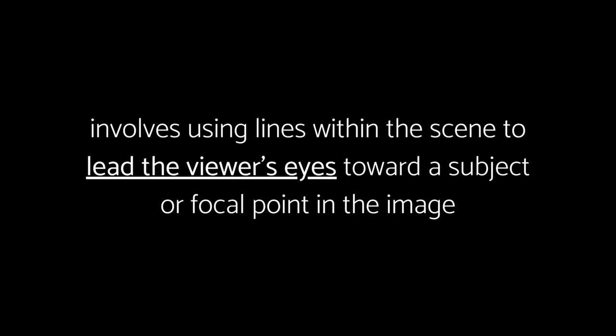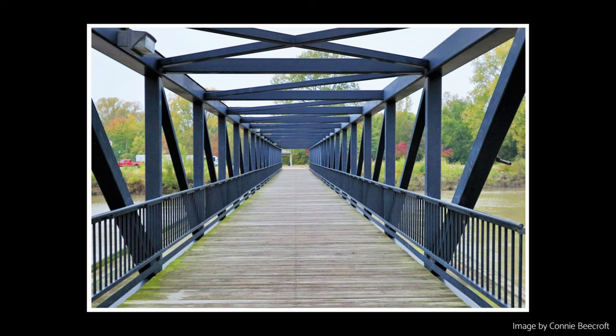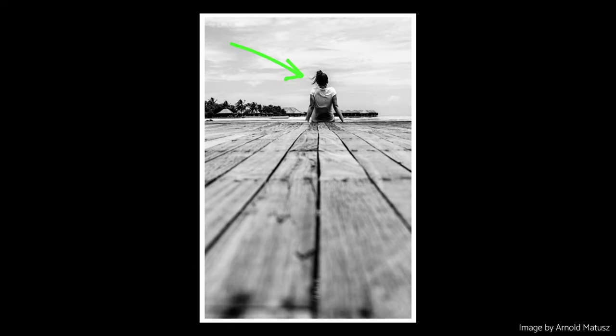The fifth technique is to use leading lines. Leading lines are a powerful composition technique that involves using lines within the scene to lead the viewer's eyes toward a subject or focal point in the image. The point that the leading lines are directed to is often the point of emphasis. When using leading lines, you'll want to consider the direction and placement of the lines. There are many things you can use as leading lines, such as railways, railings, roads, streets, pavements, etc. You'll want to ensure that the objects the lines are leading to are not too distracting, or it could draw away from the overall emphasis.